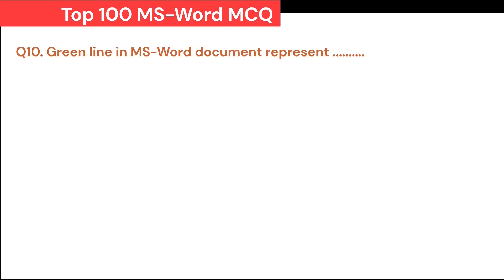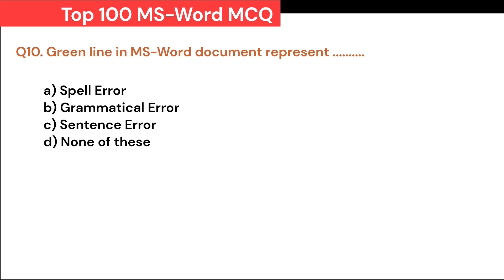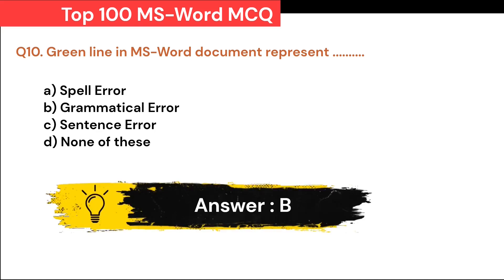Green line in MS Word document represents: A. Spell error. B. Grammatical error. C. Sentence error. D. None of these. Correct answer is B. Grammatical error.